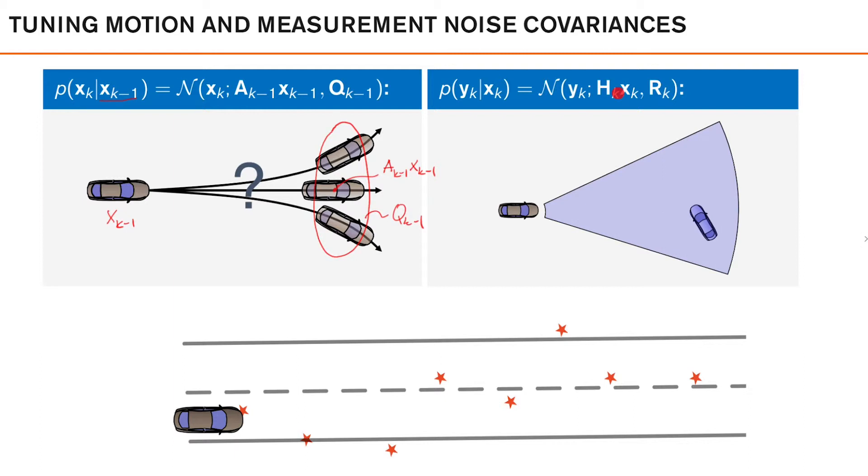Given that we know where the vehicle is, this is xk, we condition on this. We want to describe a probabilistic model for where we expect the measurements to end up. Let's say that, in this case, we're measuring the front of the vehicle here, so this would be hk times xk.